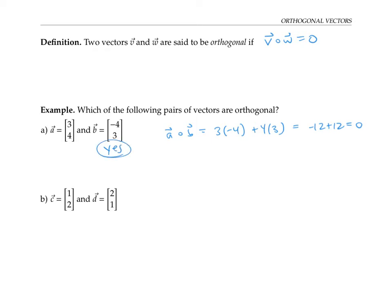For the second pair, take C dot D. That's one times two plus two times one, which works out to four, which is not zero. So no, these are not orthogonal.